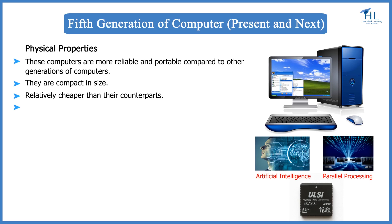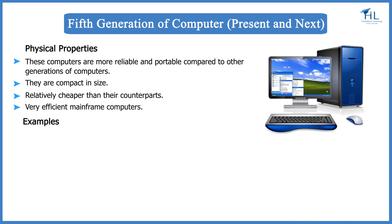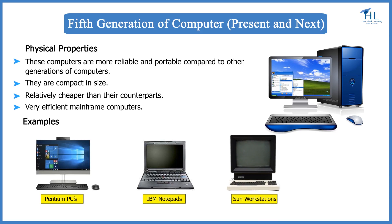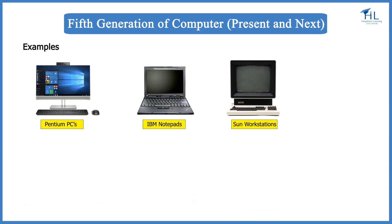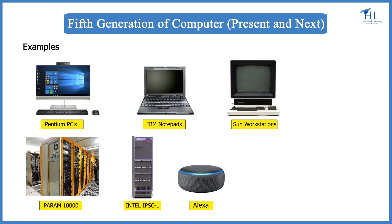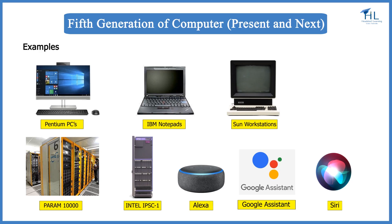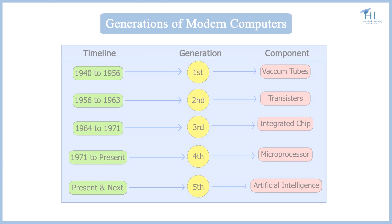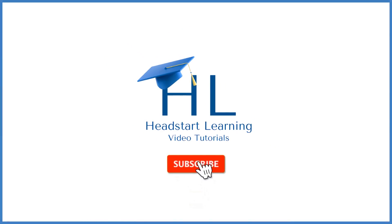The mainframe computers of this generation are very powerful. Pentium PCs, IBM notebooks, and Sun workstations are some examples. Supercomputers like PARAM 100 and parallel computers like Intel iPSC/1 are also fifth generation computers. Alexa, Google Assistant, and Siri are machines that accept commands by voice and derive results accordingly. Here is a chart showing all the generations of computers.